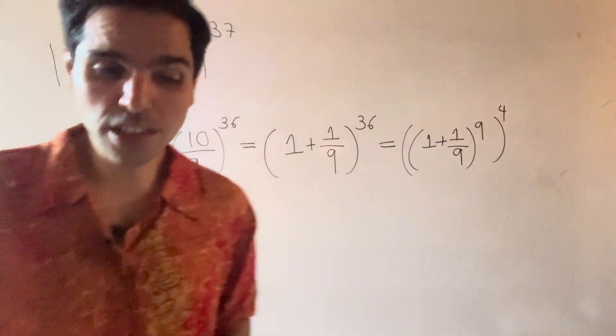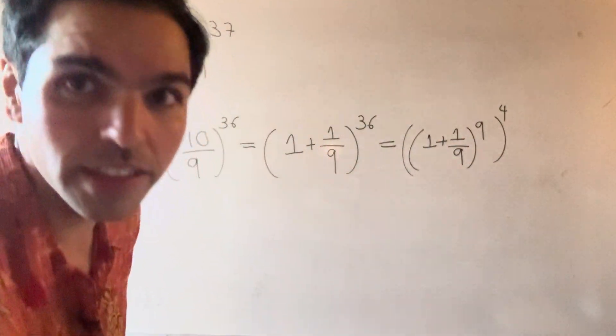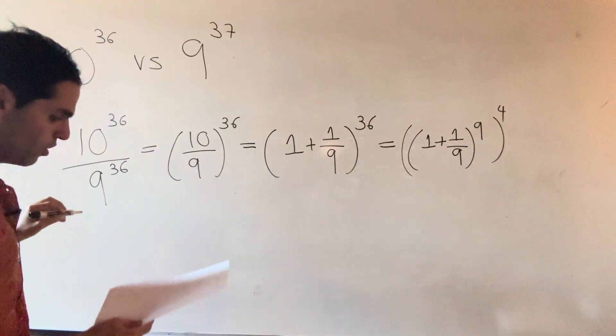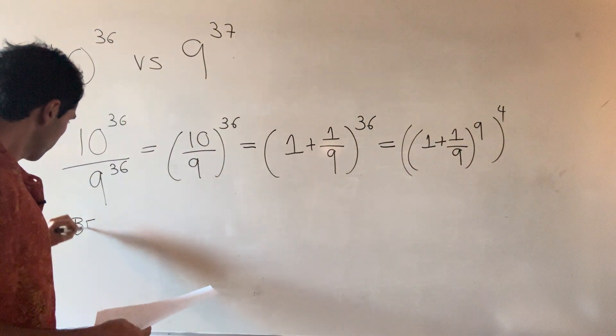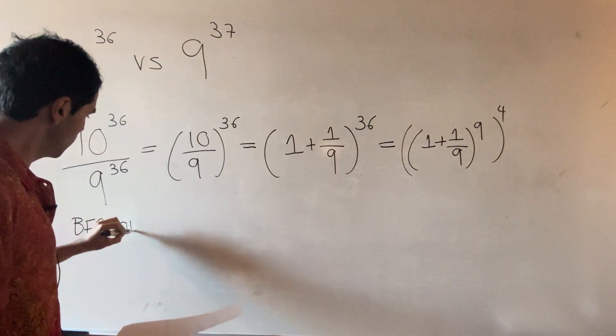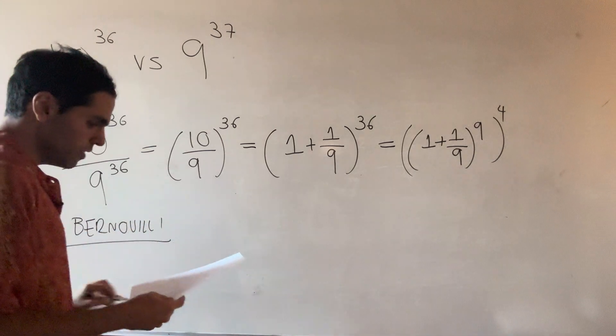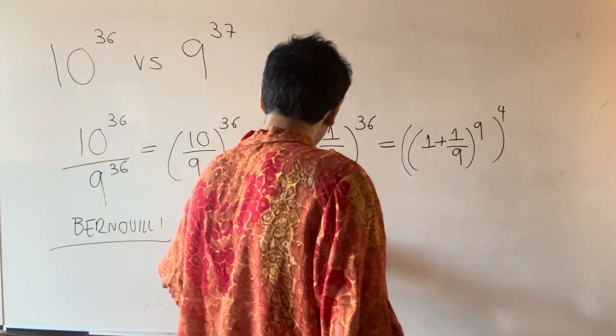And then as promised, we want to use Bernoulli's inequality, which simply says the following: Bernoulli, which says that (1 + α)^n